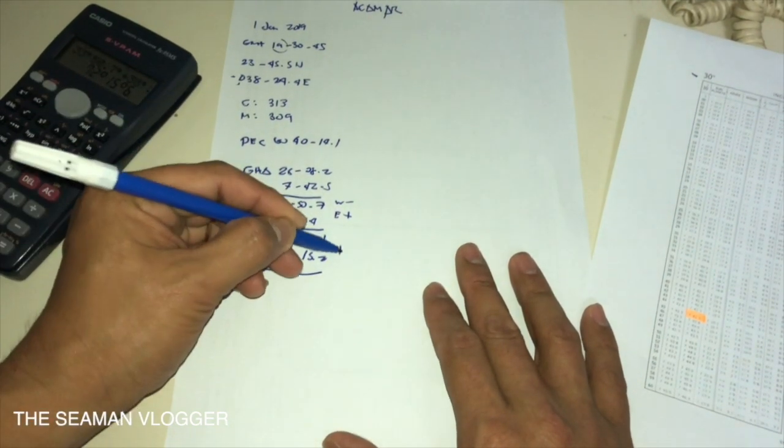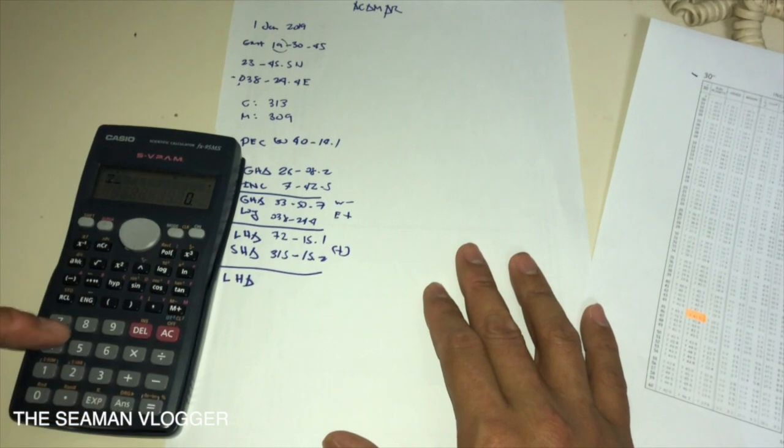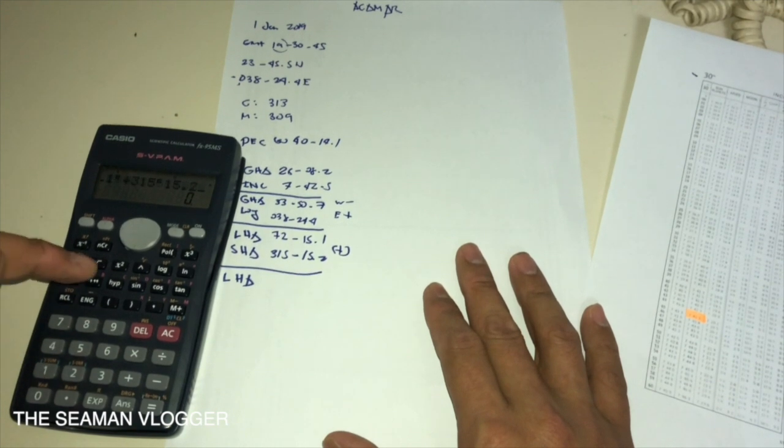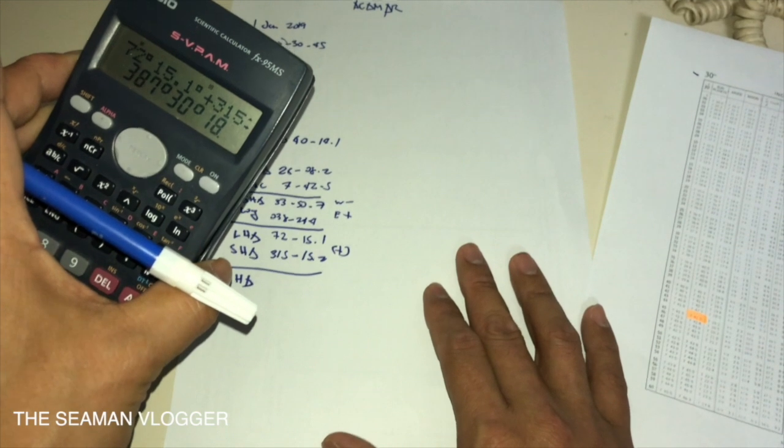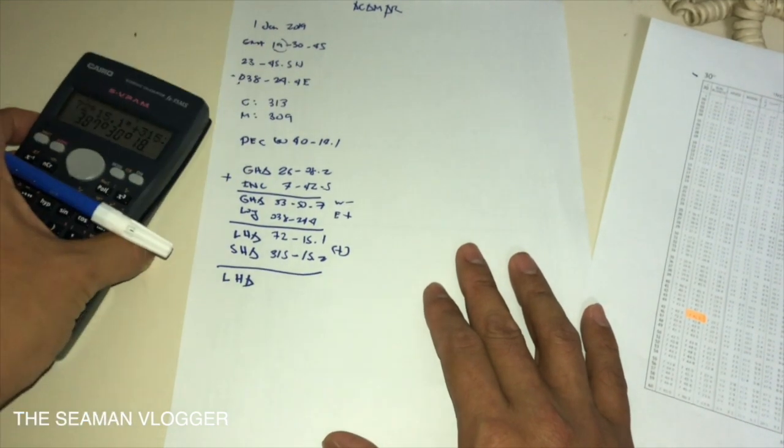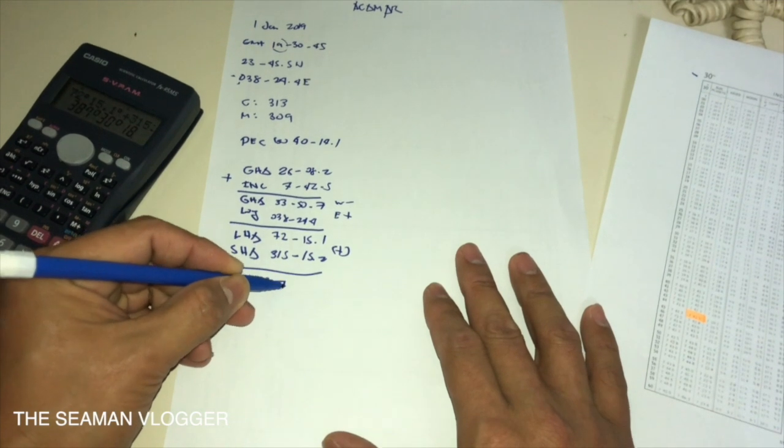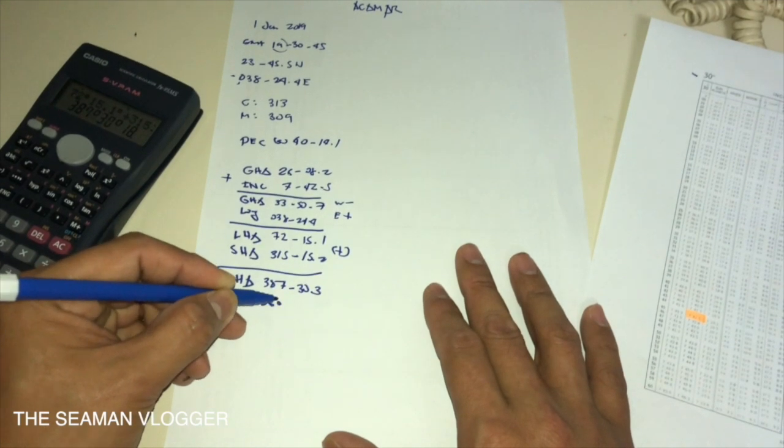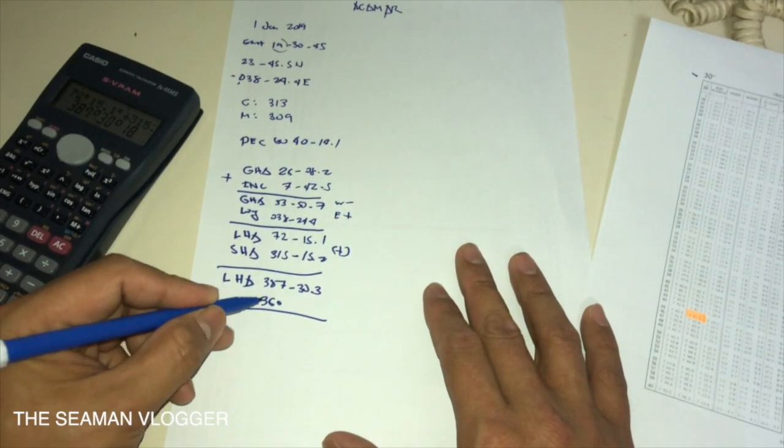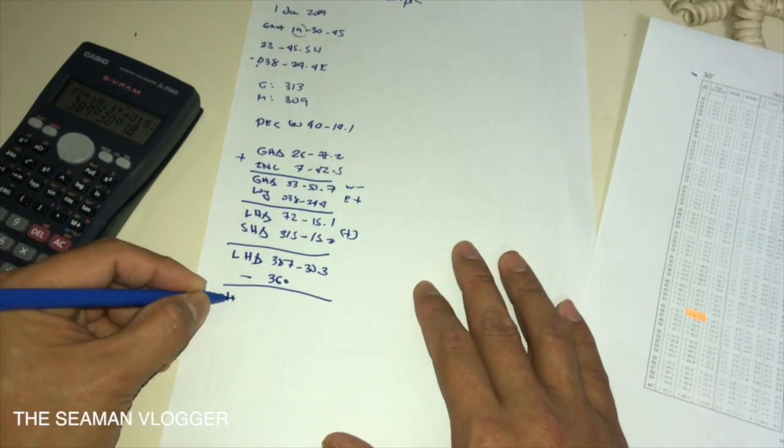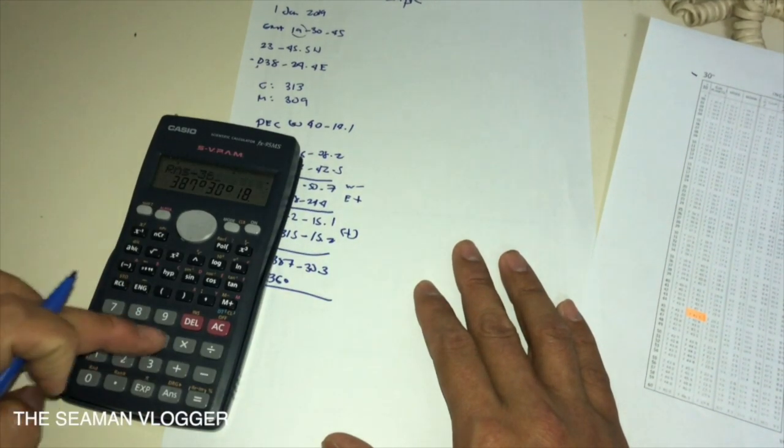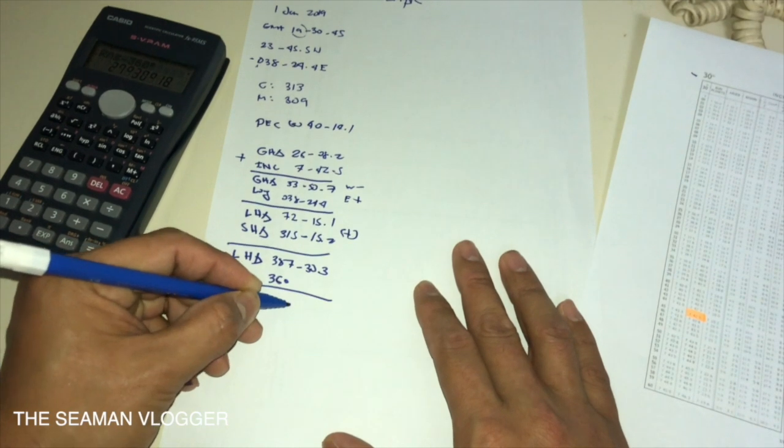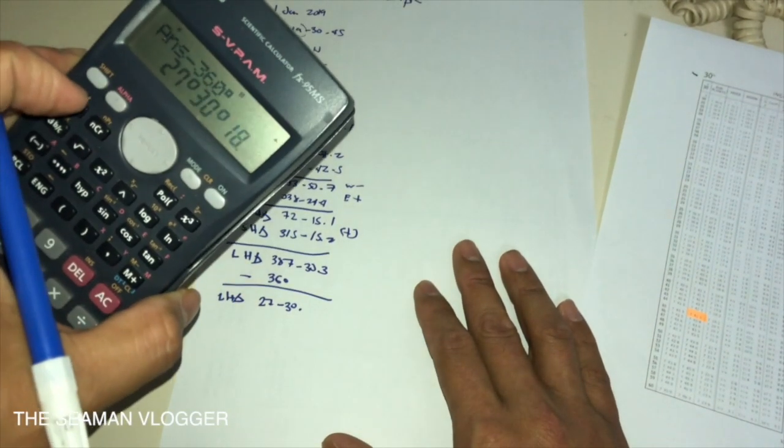Now this one is always plus. 72 degrees 15.1 minutes plus 315 degrees 15.2 minutes equals 387 degrees 30 minutes 18 seconds. Divided by 60 is 0.3. So we'll write it as 387 degrees 30.3 minutes. Now you will subtract 360. If you have LHA above 360, you must subtract it by 360. So the LHA is 27 degrees 30 minutes 18 seconds. 18 seconds divided by 60 is 0.3.